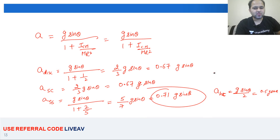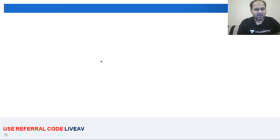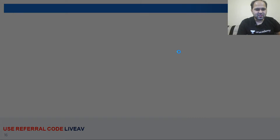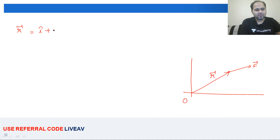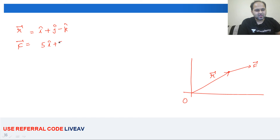Next question देखते हैं — AIIMS 2013 में आया हुआ था. Force दी हुई है, position दी हुई है, torque बताना है about origin. R vector origin से: I + J − K, so R⃗ = î + ĵ − k̂. F⃗ = 5î + 7ĵ − 3k̂.